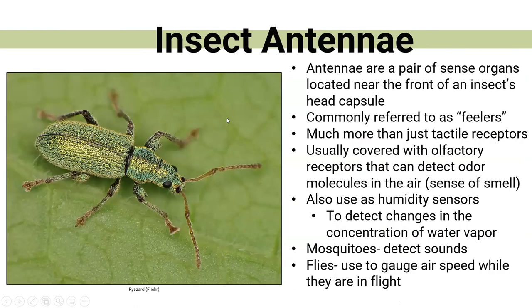Now that everyone is on the same page, let's move on to specifically talking about those antennae. Antennae are sometimes called feelers, and that's true — they do help the insect sense the world around them. They're a tactile receptor, but it's so much more than that. It depends on the species, but they are a pair of sense organs located near the head. They are covered with olfactory receptors, so they can detect odors and molecules in the air — basically a sense of smell for the insect.